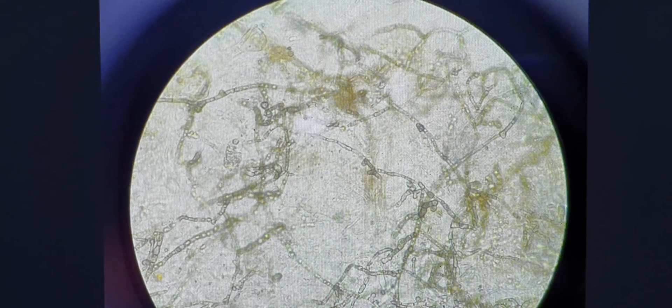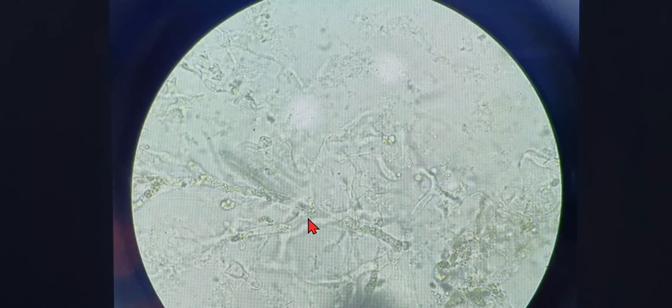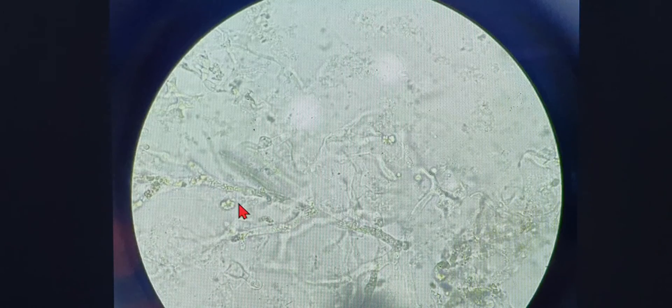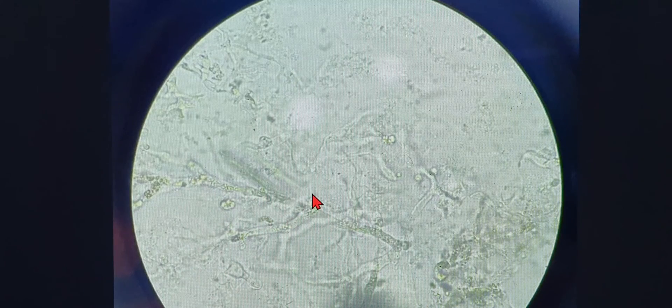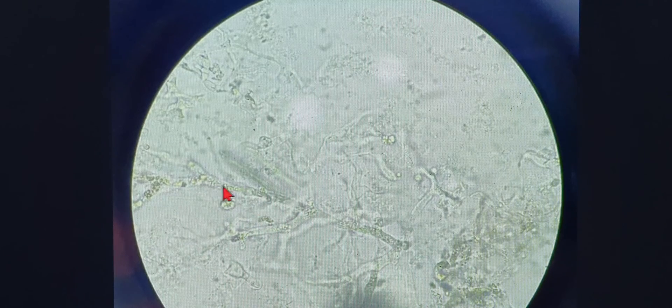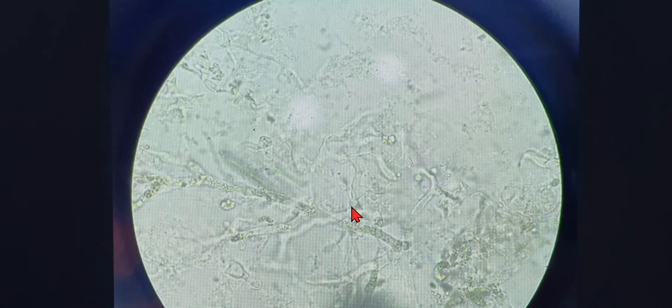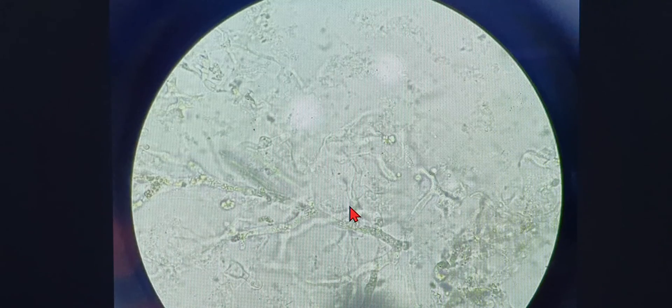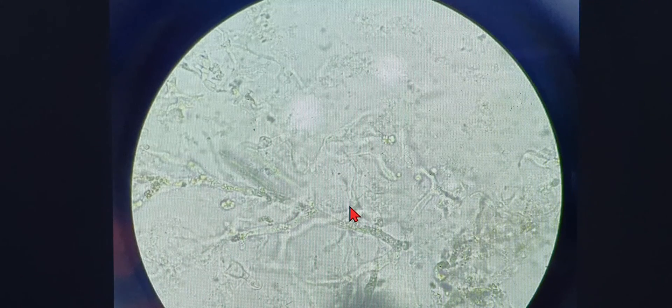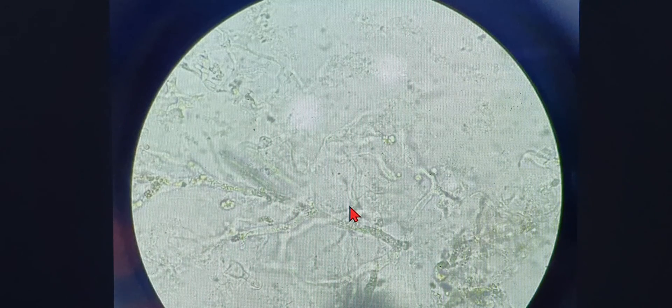I also have a case of mucor. As you can see, these are non-septate, they are broad and they are angulated at around 90 degrees branching. This is typical of a mucor finding, and mucor most probably causes obliterative necrosis in the blood vessels.